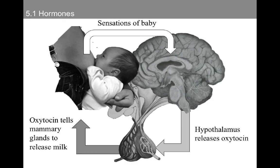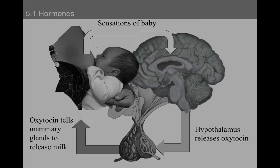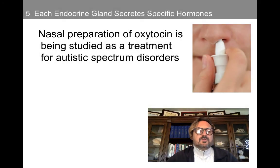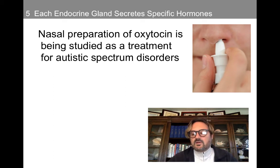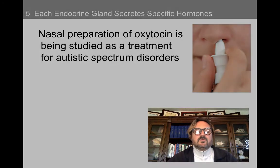In this particular feedback loop, the sensation of the baby leads to a hypothalamic release of oxytocin, and the oxytocin will tell the mammary gland to release milk — this is how oxytocin exerts its effect upon nursing mothers. A nasal preparation of oxytocin is also being studied as a treatment for many conditions, including autistic spectrum disorders, where sometimes it seems like emotional bonding isn't as strong as it would be in controls.